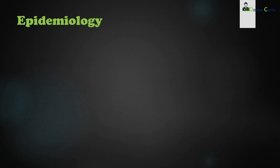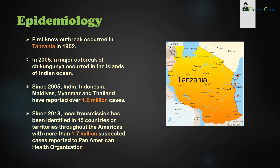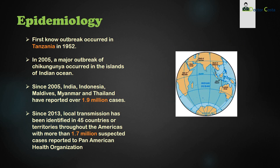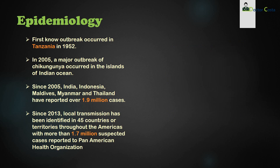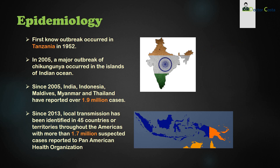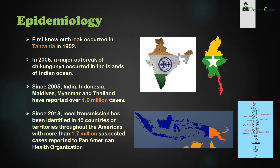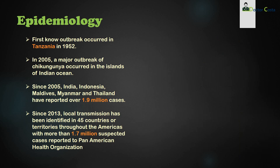The first known outbreak of chikungunya occurred in Tanzania in 1952. In 2005, a major outbreak occurred in the islands of the Indian Ocean. Since 2005, India, Indonesia, Maldives, Myanmar, and Thailand have reported over 1.9 million cases. Since 2013, local transmission has been identified in 45 countries or territories throughout the Americas, with more than 1.7 million suspected cases reported to the Pan American Health Organization.